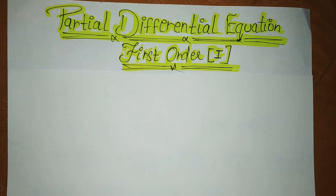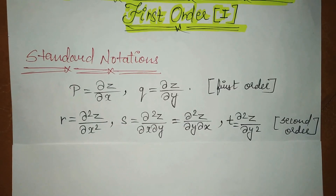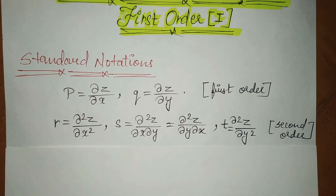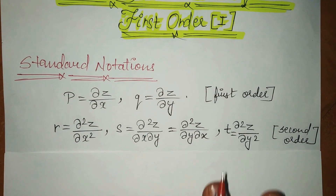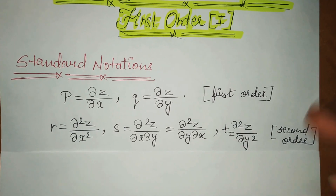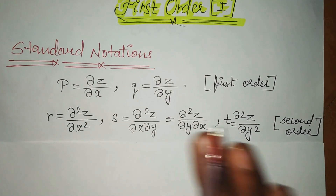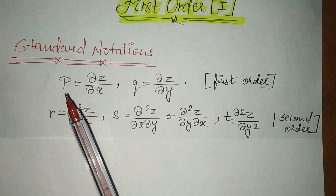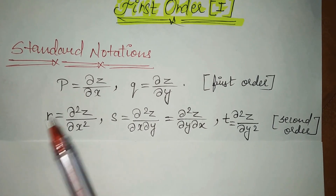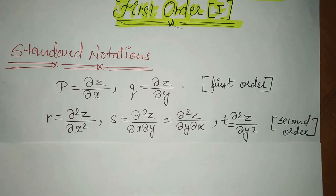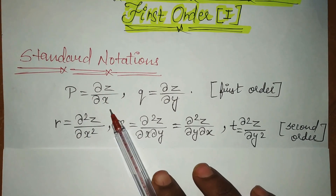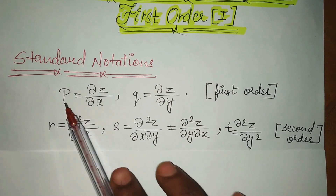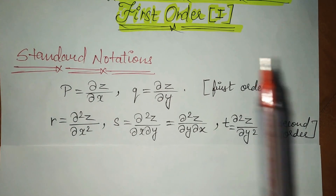So firstly, we will see some rules. In partial differential equations, you just have to remember some standard forms or standard notations which are written here. The standard form of del z upon del x is p. When we do differentiation and get del z upon del x, this value will represent p.